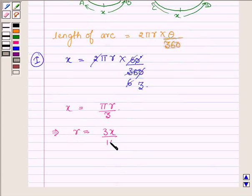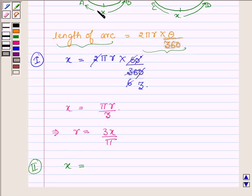Now let us consider the second circle and again apply this formula. Here, length of the arc is x, since arc of both the circles are same. Then we have 2 pi times radius.